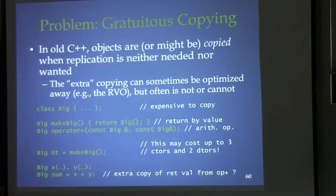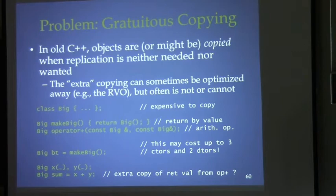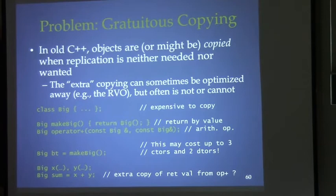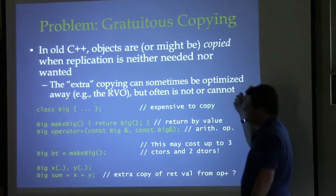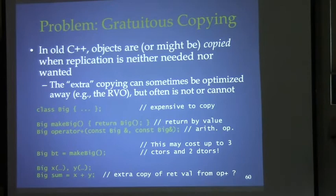Consider a class `Big` with lots of data. A function `makeBig` returns an anonymous `Big` object by value. According to the language semantics, an object is constructed, then copy-constructed, the caller gets a copy, and then the original is destroyed. Technically, calling `makeBig` may cost up to three constructors and two destructors. With `operator+` for two `Big` objects, there's probably an extra copy of the return value created and destroyed. The as-if rule means the compiler will often optimize this away, but not always.